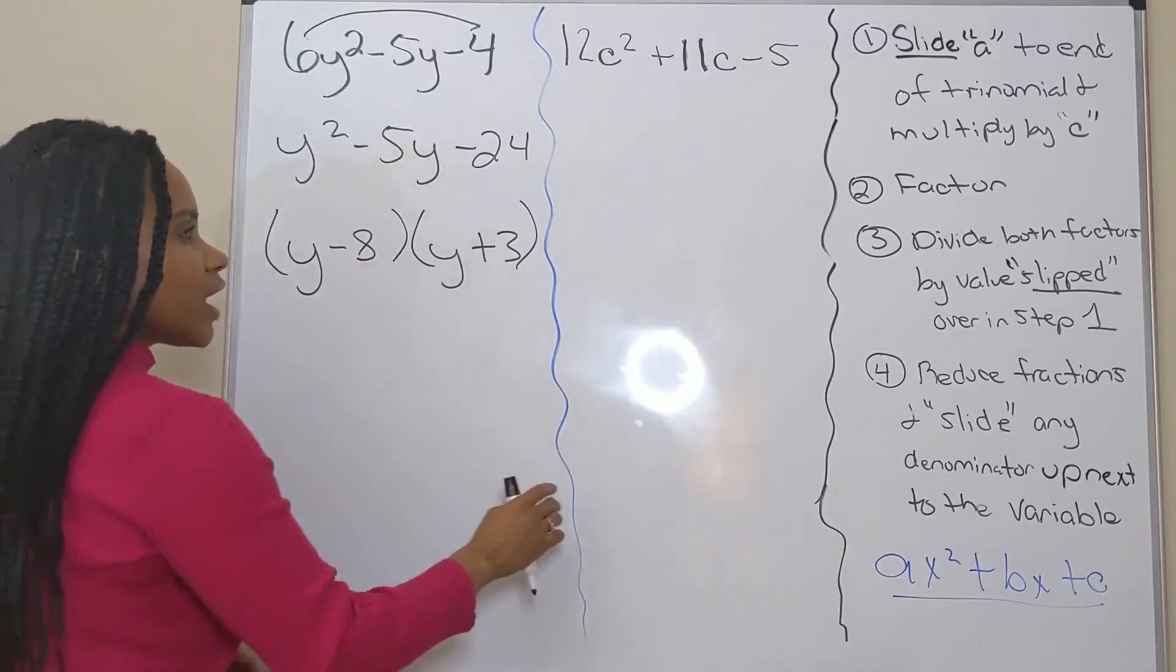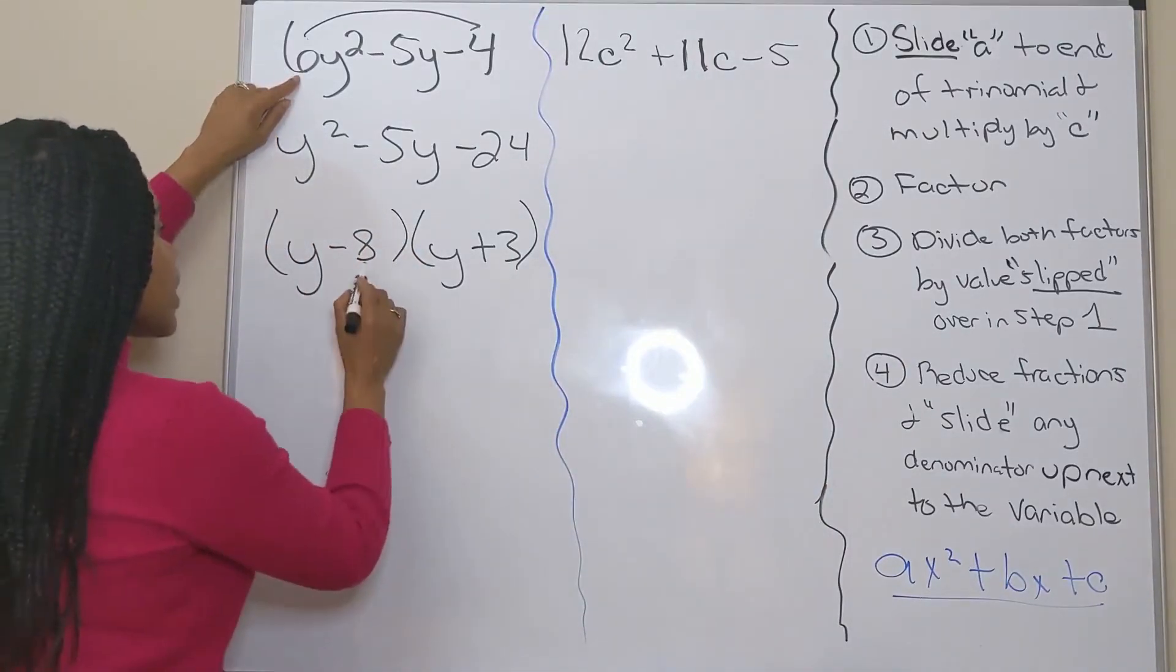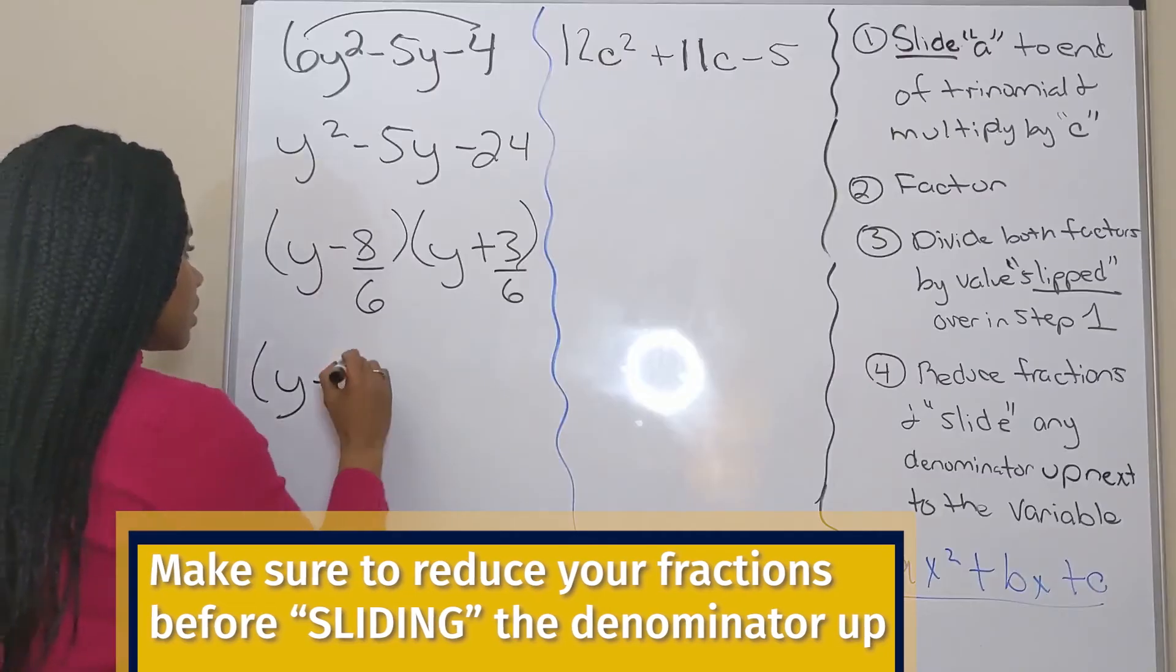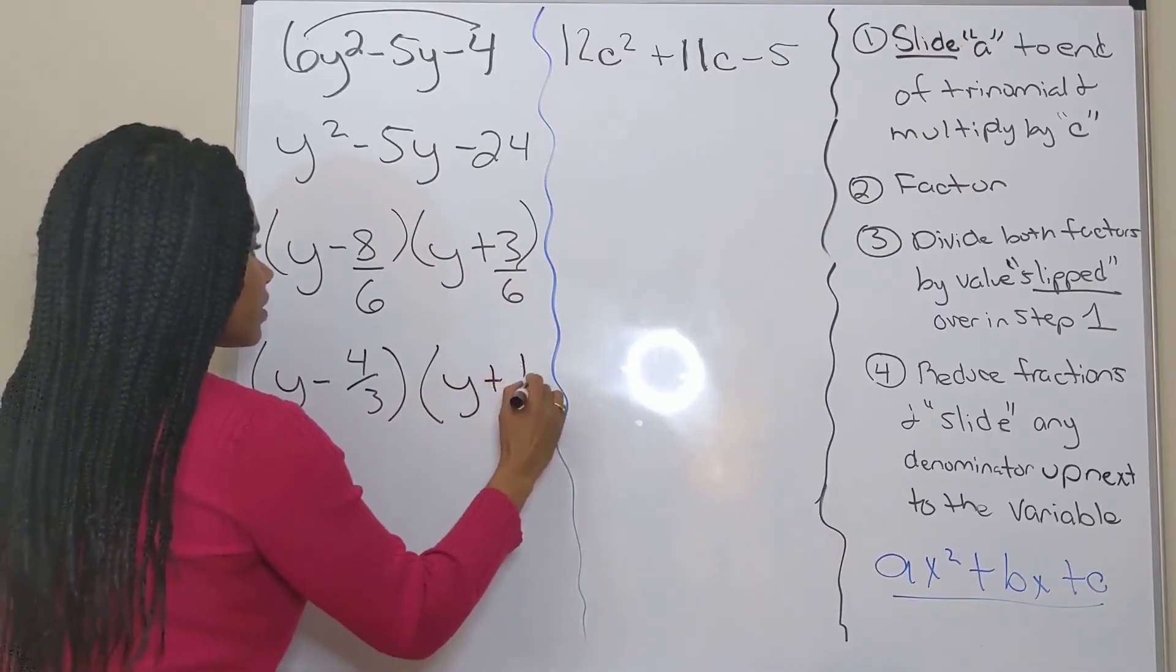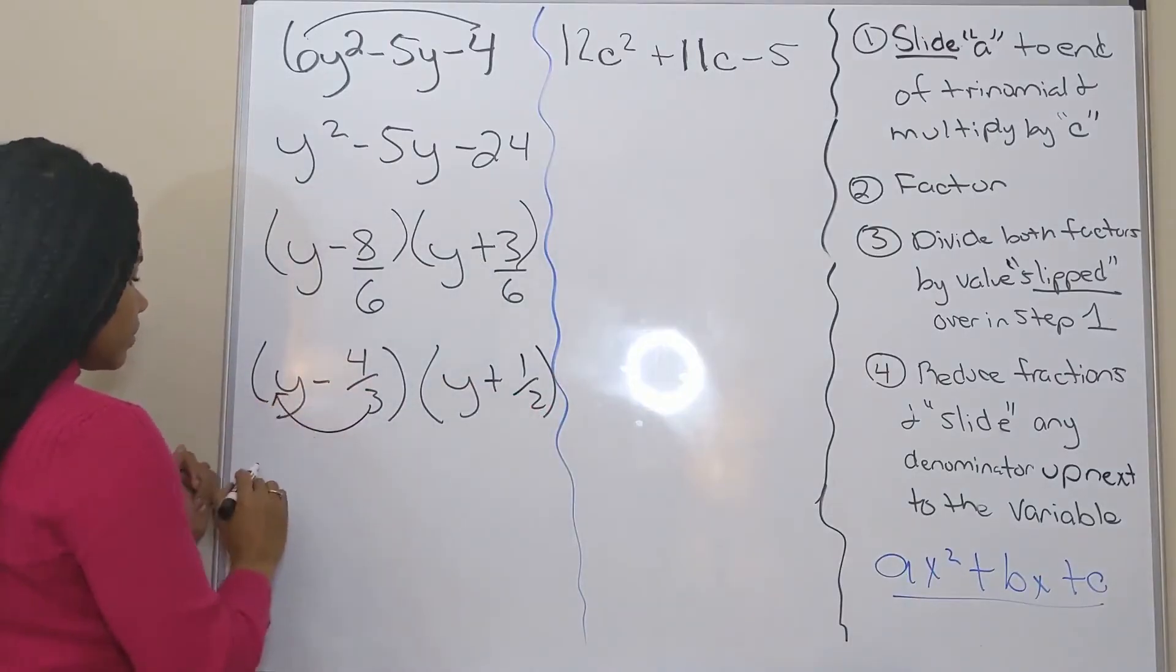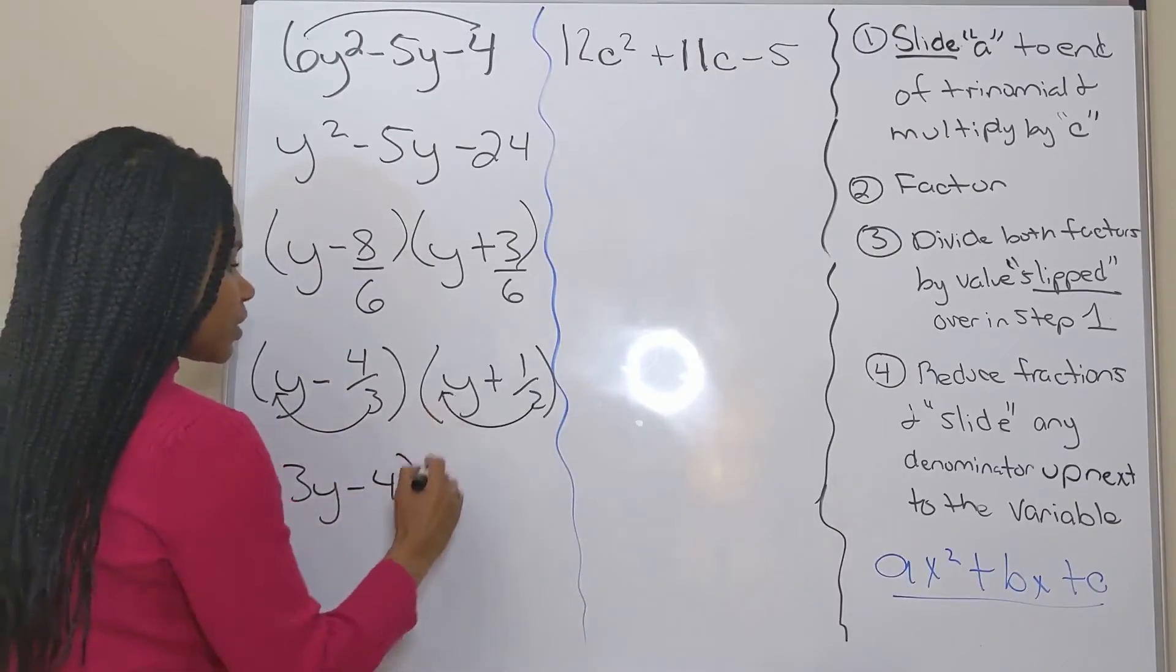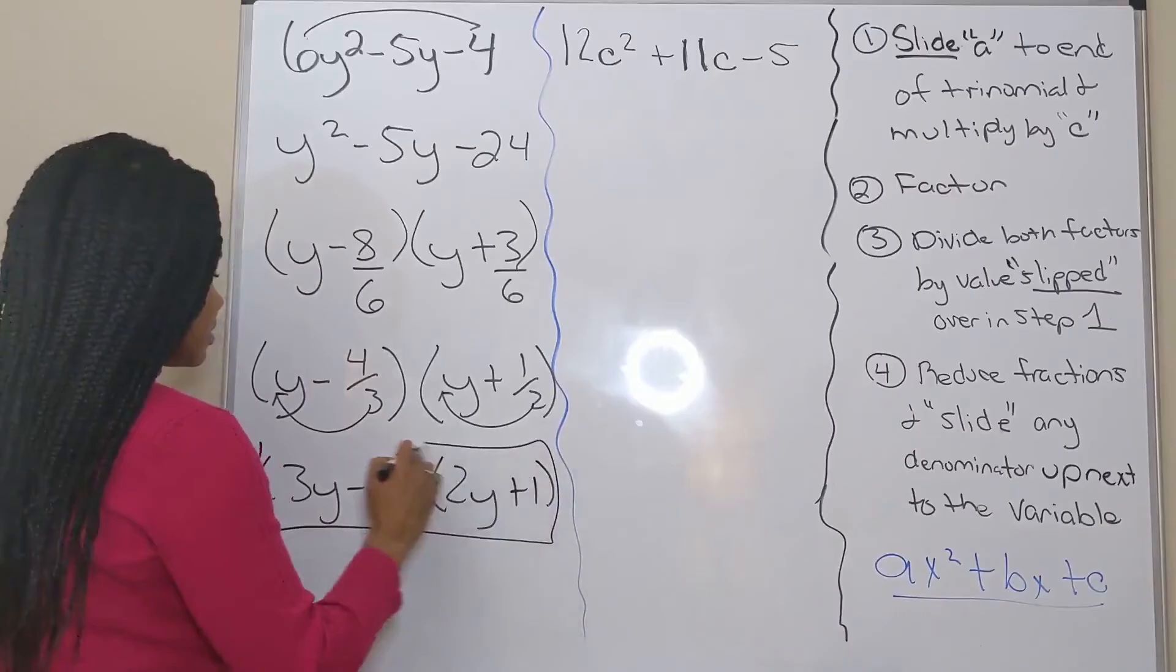All right, next, I want to divide both fractions by my value that I slipped over from step one. So I want to divide both of my factors here by six. Now I have to reduce. Eight over six reduces to four thirds. Three over six reduces to one half. Now I get to slide my denominator up to the variable. So I'm going to slide the three up. I'm left with three y minus four. Bring down my numerator. I'm going to slide the two up. Two y plus one. All right, so I have factored this expression.